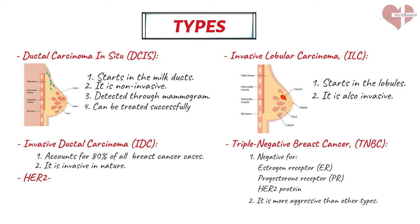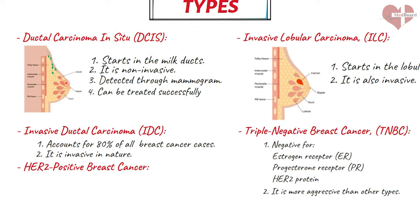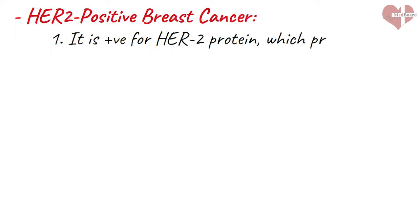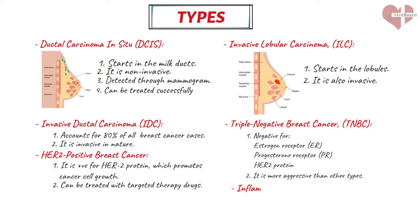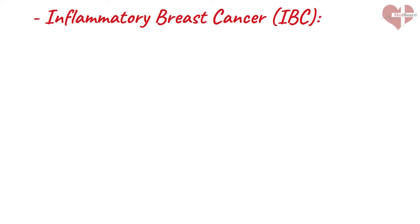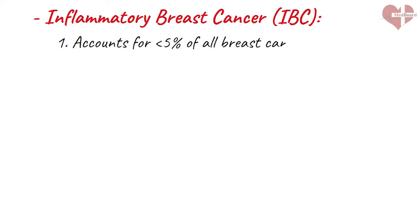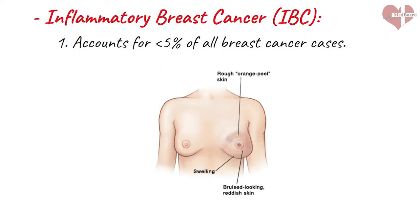HER2-positive breast cancer tests positive for the HER2 protein, which promotes the growth of cancer cells, and can be treated with targeted therapy drugs that block the HER2 protein. Inflammatory breast cancer (IBC) is a rare but aggressive type that accounts for less than 5% of all breast cancer cases. IBC causes the breast to become red, swollen, and warm to the touch, and can often be mistaken for a breast infection. IBC requires immediate treatment and can be difficult to treat.